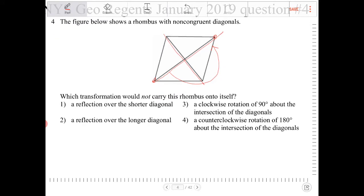So let's take a look at the answer choices here. A reflection over the shorter diagonal, that will certainly land on itself. So we're looking for something that would not carry this rhombus onto itself. Reflection over the longer diagonal, that too will also carry the rhombus onto itself.